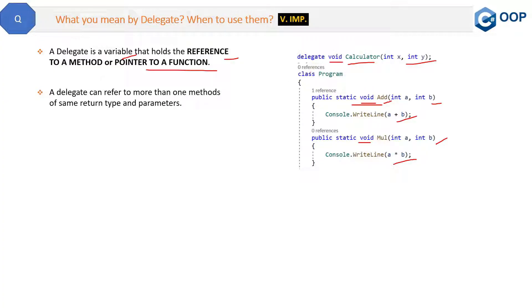From this we can conclude that a delegate can refer to more than one method of same return type and parameters, or we can say same signature. This is the first thing. Now how can we consume this delegate?